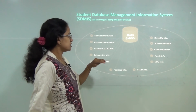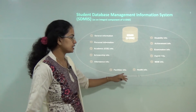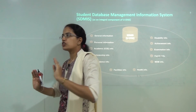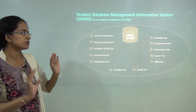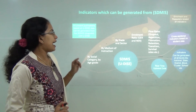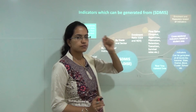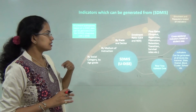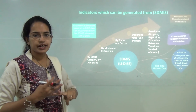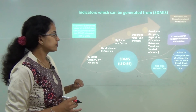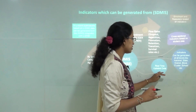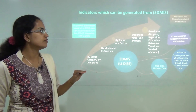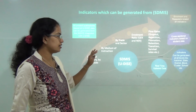The SDMIS system includes general and personal information of every child, academic information, scholarship information, attendance, facilities, health, family, examination, achievement, and disability information. Data is segregated by gender, medium of instruction, gross enrollment ratio, age, grade, class, and social category. It provides real-time data updates, grade tracking, and grade monitoring. A child's progress, class repetitions, and subjects requiring additional effort are all recorded.